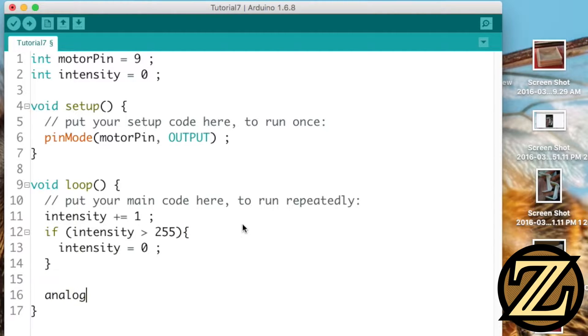Then we're going to write using analog write to our motor pin our intensity value. We will then give a 20 millisecond delay. Go ahead and upload this to your Arduino Uno now.